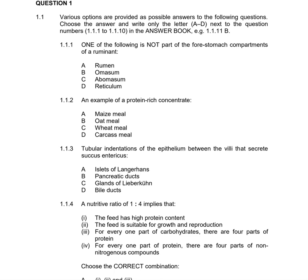Question 1.1.3 — please don't judge my spelling — refers to the Glands of Lieberkuhn. It is like a bowel structure. The correct answer is C, the Glands of Lieberkuhn.